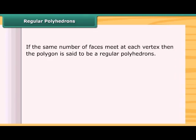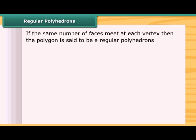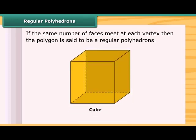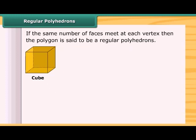If the same number of faces meet at each vertex, then the polygon is said to be a regular polyhedron. A cube is a regular polygon because here, three faces meet at each vertex.